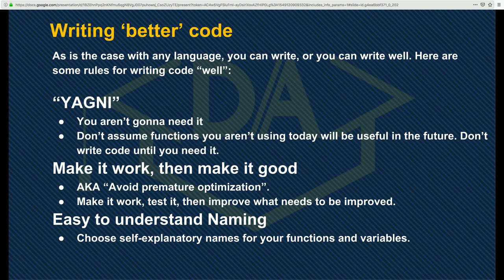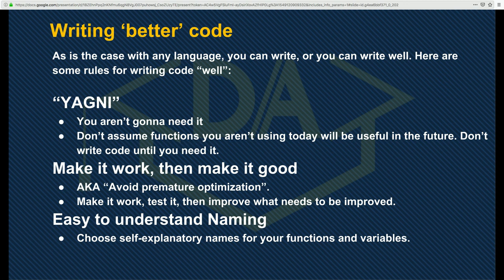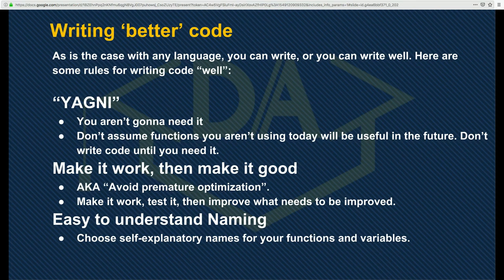Finally, easy-to-understand naming. There's a common saying: there are only two hard things in programming — caching, naming things, and off-by-one errors. The naming things part tends to surprise people. The bigger the application you write, the more challenging naming things becomes. I'll find that when I'm writing complicated code, I have a Slack channel with four close friends and I'll regularly come to them and say: 'I'm building this thing, I'm thinking about calling it this, but my concerns with that name are X, Y, Z.' And we'll debate what the best name is.